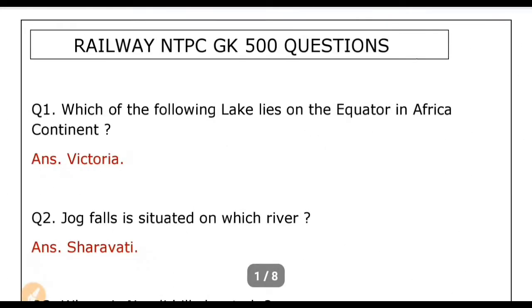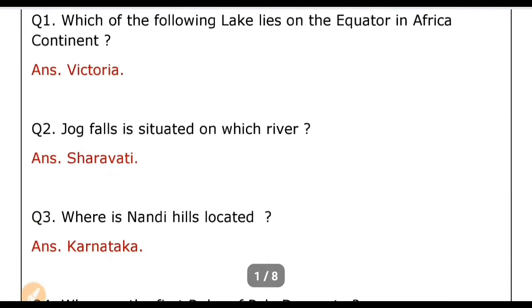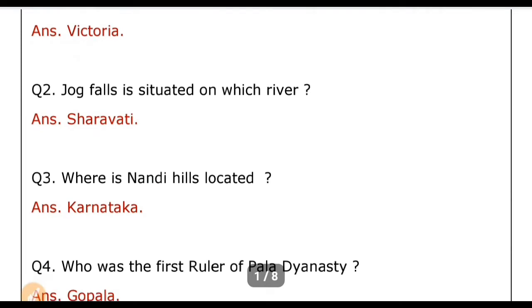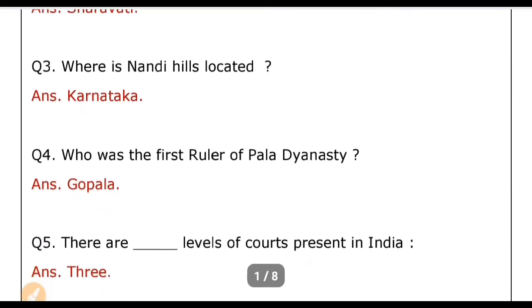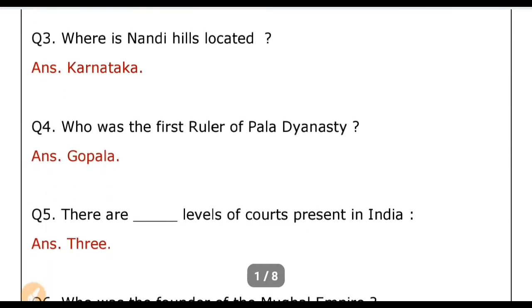Which of the following lakes lies on the equator in Africa? Answer: Victoria. Jog Falls is situated on which river? Answer: Sharavati river. Where is Nandi Hills located? Answer: Nandi Hills is located in Karnataka. Who was the first ruler of the Pala dynasty? Answer: Gopala.